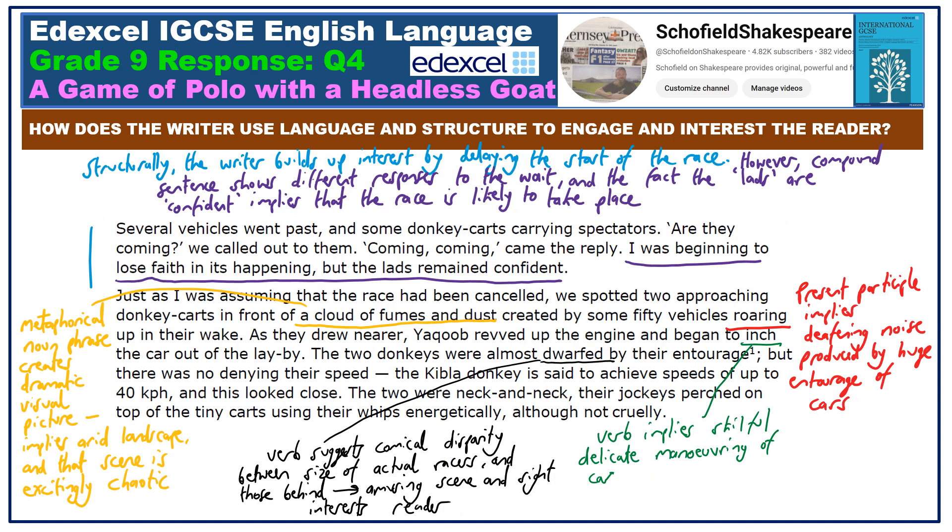Within this section, notice how structurally the writer builds up interest by delaying the start of the race, and we get a sense that the narrator worries that it won't happen at all. Notice also in the second paragraph on screen some of the images used — look at the cloud of fumes and dust, which creates a very dramatic visual picture. It also emphasises that perhaps we're in a non-Western location. We are, of course, in Pakistan, and that implies just how dry and arid the landscape is there.